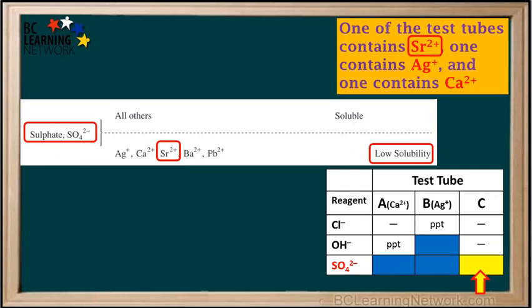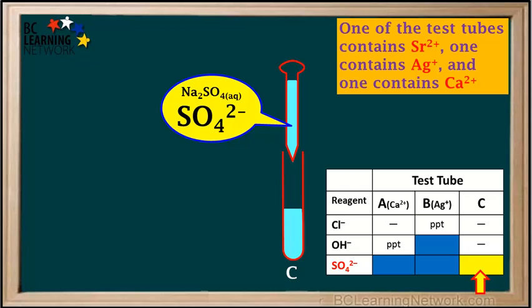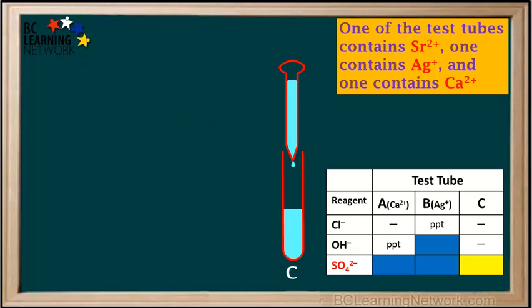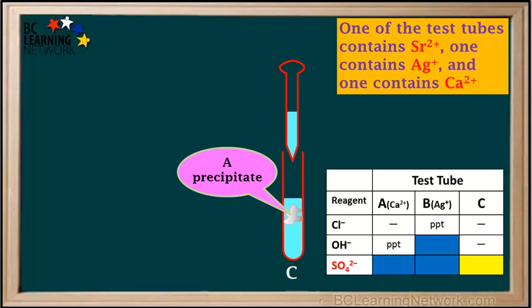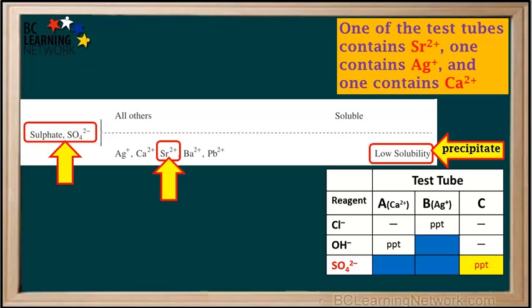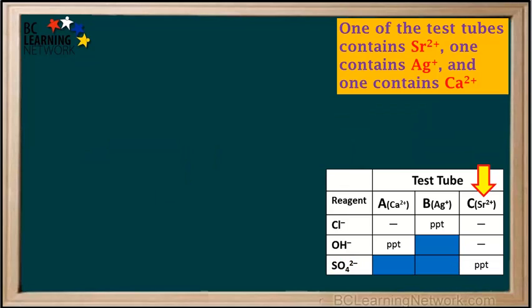Since we already know what's in test tubes A and B, we'll just add sulfate to test tube C. We fill a pipette with sodium sulfate solution, which is a source of the sulfate ion, SO4 2-. We add sulfate to test tube C and observe a precipitate. So we mark PPT in the cell for sulfate added to test tube C. Because strontium ions form a low solubility compound with sulfate, the presence of a precipitate confirms that test tube C contains strontium ions.